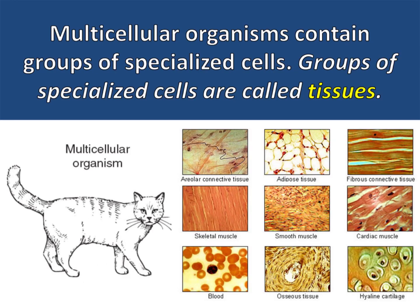Multicellular organisms contain groups of specialized cells. Groups of specialized cells are called tissues. Blood, adipose or fat tissue, and muscle tissue are all examples of tissues that you can find inside animals.